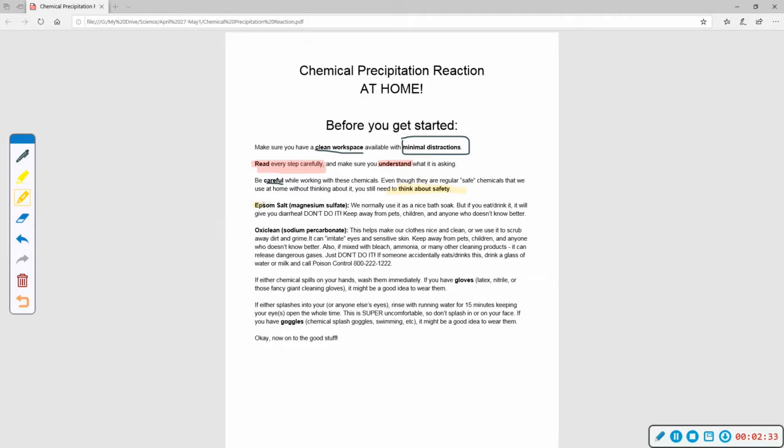So our first chemical is Epsom salt. Its chemical name is magnesium sulfate. So if you've ever taken a nice warm bath and poured in some bath salts, you have probably used Epsom salts before. It just is nice to soak in. It helps your muscles feel a little better. We normally use it as a bath soak. But if you eat or drink it, it will give you diarrhea. So what's happening is it's called a laxative if you take it internally. Just don't do it. Do not eat it. Do not drink it. Keep it away from pets. Keep it away from children. Keep it away from anyone who thinks they want to do the Tide Pod Challenge.